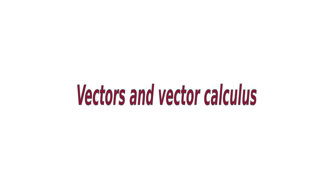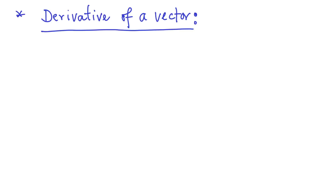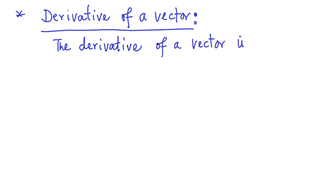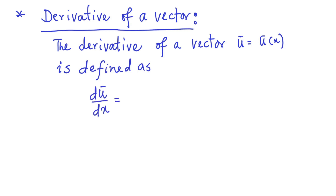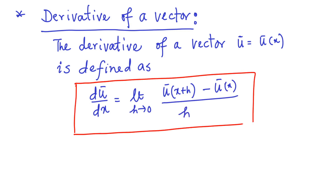In today's session, we are going to discuss the methods of calculus involving vectors. In analogy with the derivative of a function, we can define the derivative of a vector. The derivative of a vector u is defined as du/dx equal to the limit as h goes to 0 of u at x plus h minus u at x, over h. As you can see, the derivative of a vector is defined in a similar manner.